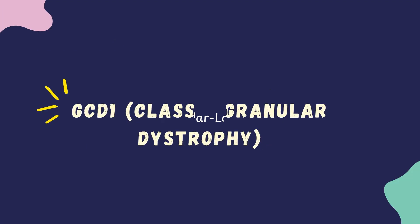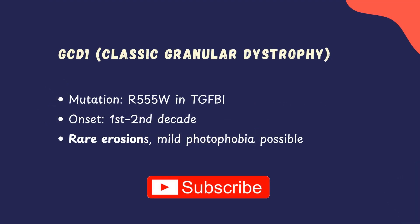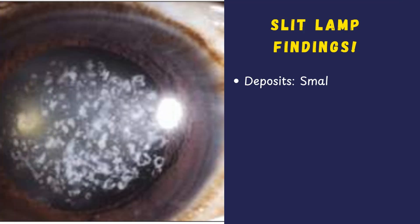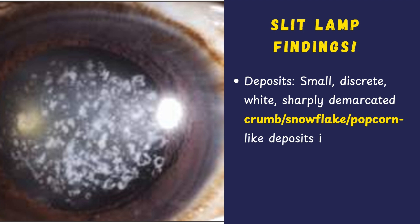Let's discuss GCD Type 1, the classic form. Onset is usually in the first or second decade of life. Patients present with recurrent corneal erosions; however, erosions are rarer compared to Type 2. Photophobia is also milder compared to Type 2 and lattice dystrophy. On slit lamp, you will see small, white, sharply demarcated deposits in the anterior stroma, described as breadcrumb-like, snowflake-like, or popcorn-like.